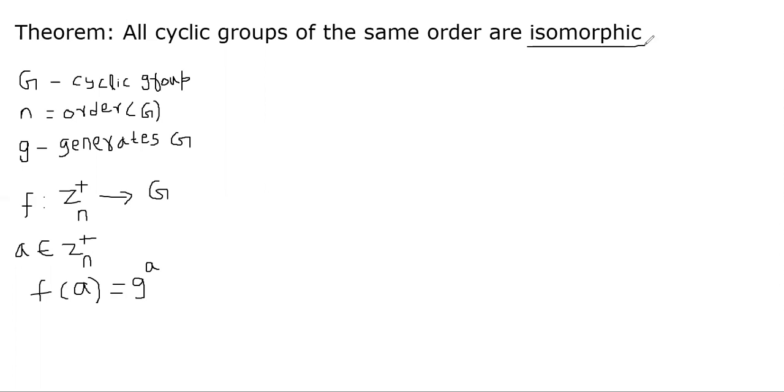This is the definition of the function f. Now, in order to prove two groups are isomorphic, I need to show this property: f(a + b) equals f(a) times f(b). Why am I using a plus on the left-hand side but a multiplication on the right-hand side? That's because our group operator is plus for Z_n^+, and for G, I'm going to use star as the group operator. So I need to prove that f(a + b) equals f(a) star f(b), where star is defined in the group G.